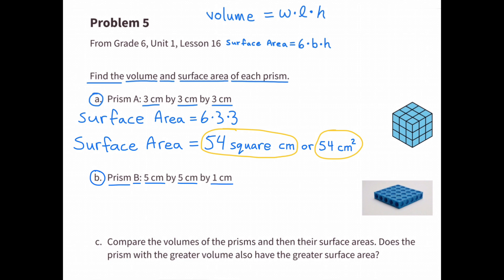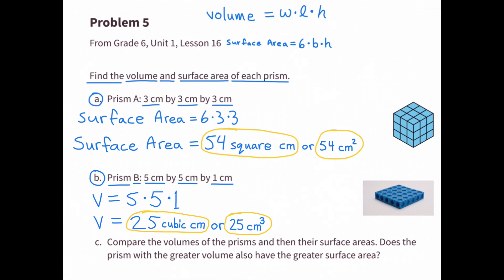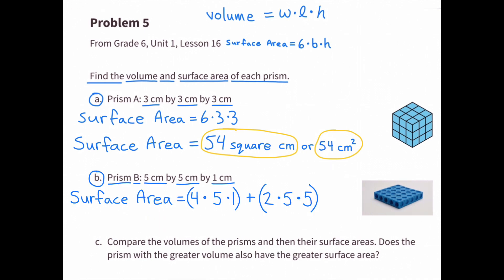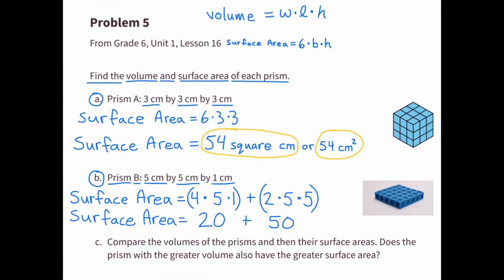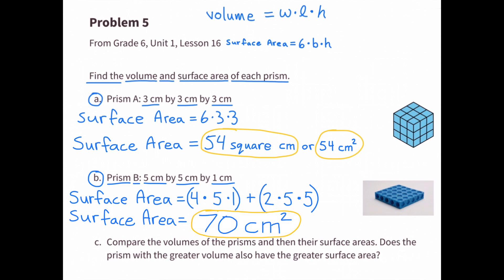Part B: Prism B is 5 centimeters by 5 centimeters by 1 centimeter. To find the volume: 5 times 5 times 1 equals 25 cubic centimeters. For surface area, there are 4 sides with area 5 times 1, plus 2 sides with area 5 times 5. 4 times 5 times 1 is 20, and 2 times 5 times 5 is 50. 20 plus 50 equals 70, so the surface area of Prism B is 70 square centimeters.